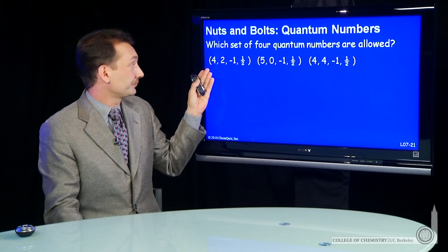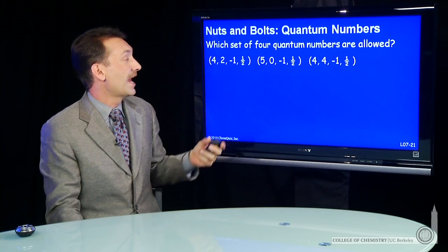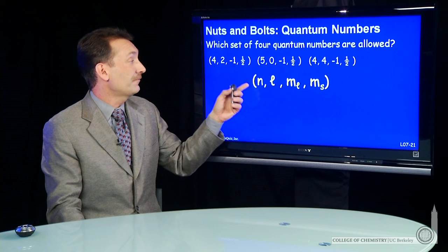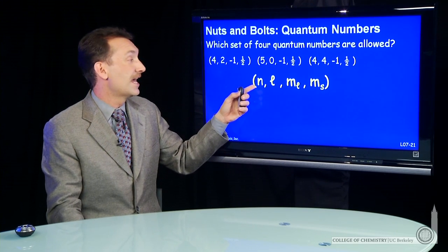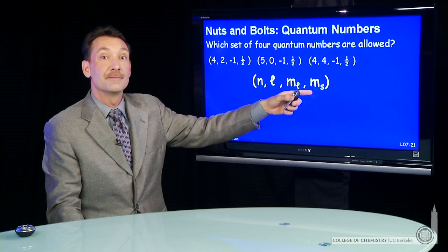So I have 4, 2, minus 1, 1 half. That's a set of four going in the sequence n, l, m sub l, m sub s.